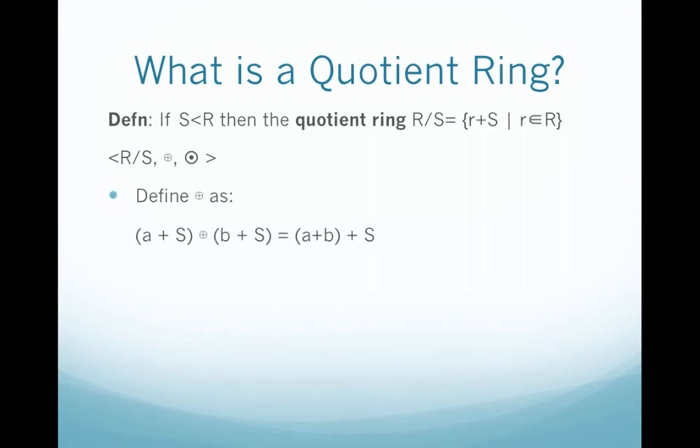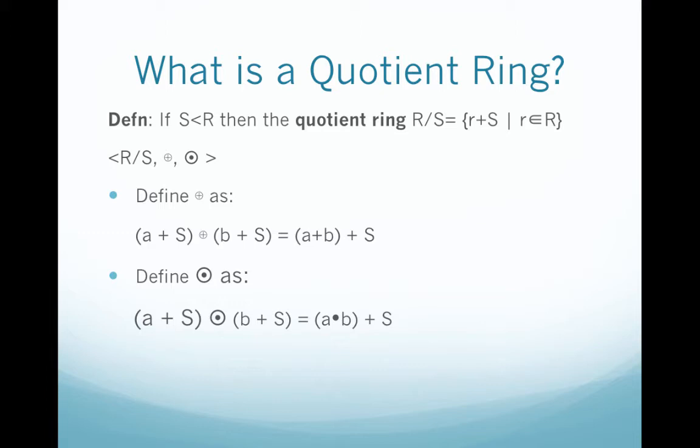So we're going to say that if we add two cosets, say (A + S) + (B + S), then that's really just adding A + B and then adding S. And similarly, we're going to define multiplication of cosets: if we multiply (A + S) times (B + S), that's really just going to be AB + S.